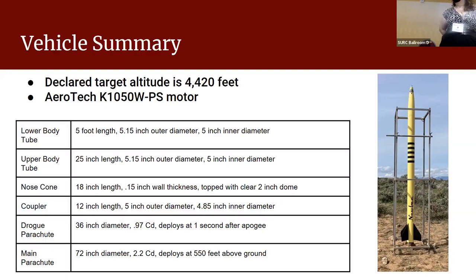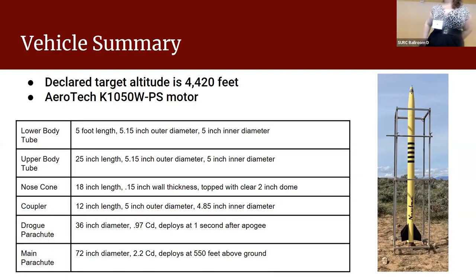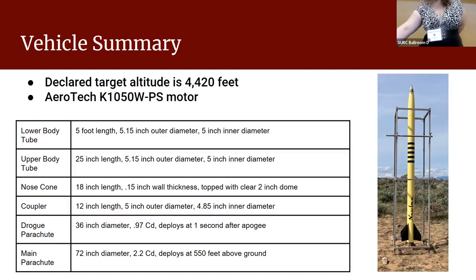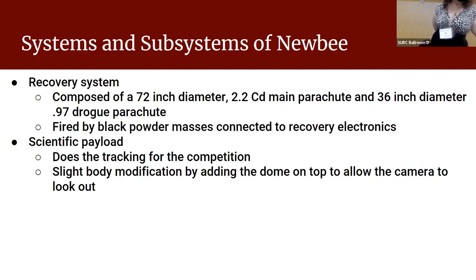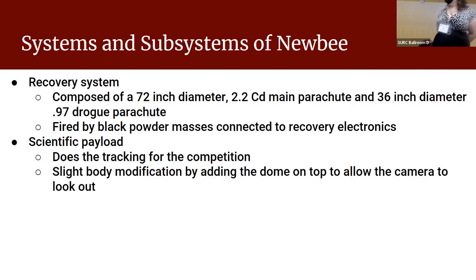The airframe consists of three components: a five-foot lower body section, a 25-inch upper body section, and a 20-inch nose cone consisting of an 18-inch fiberglass section and a two-inch clear plastic dome at the top. The drogue chute is 36 inches in diameter and the main chute is 72 inches in diameter, on opposite sides of a 12-inch coupler resting in the middle of the lower and upper body sections.